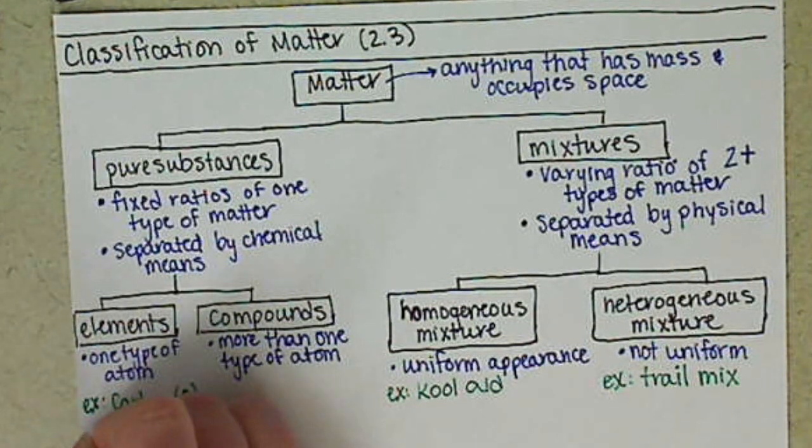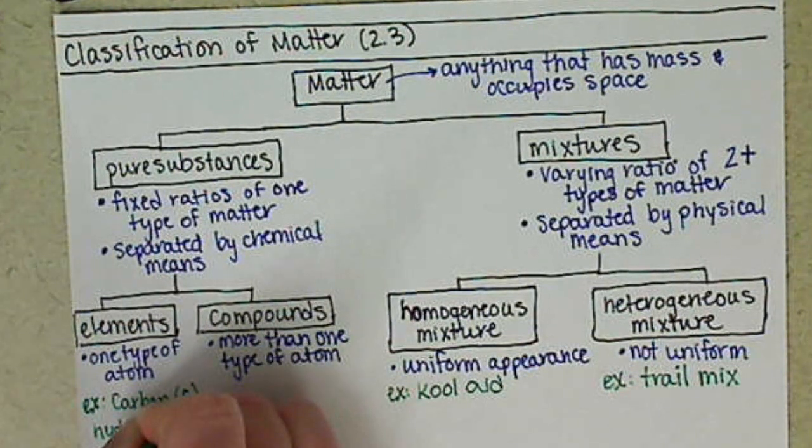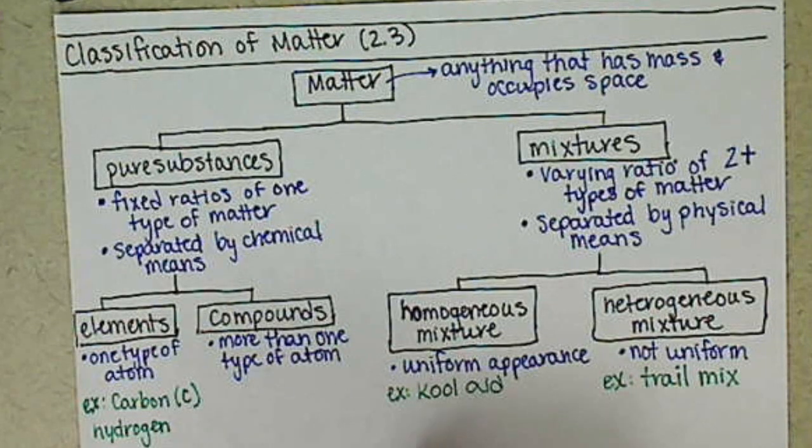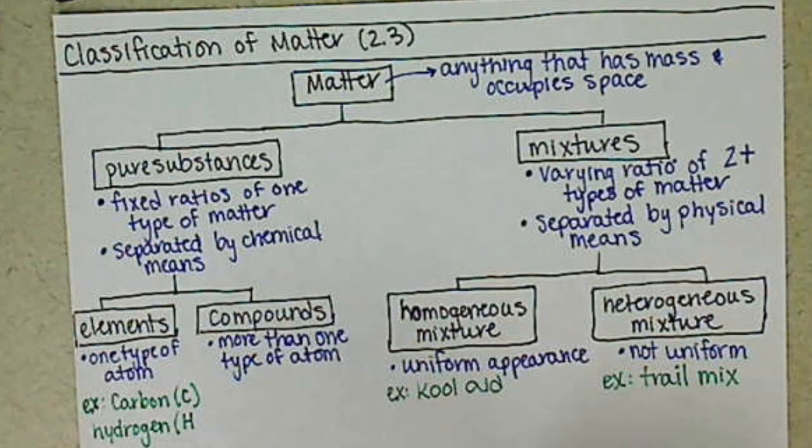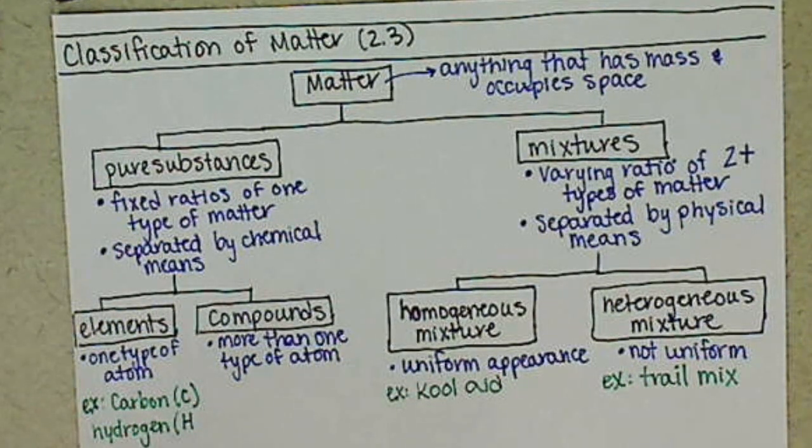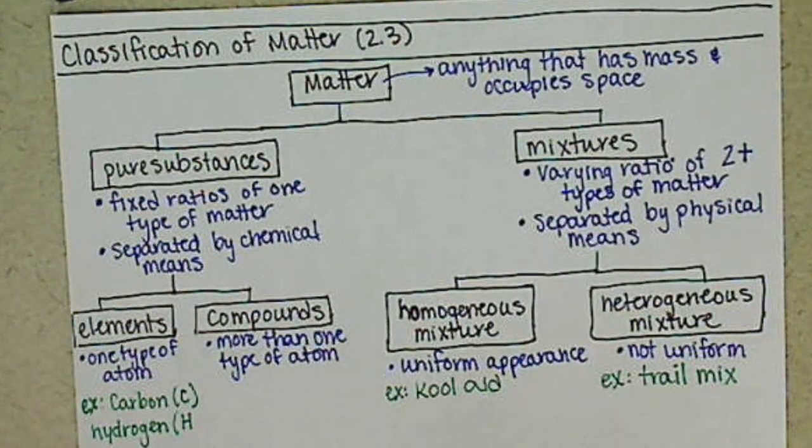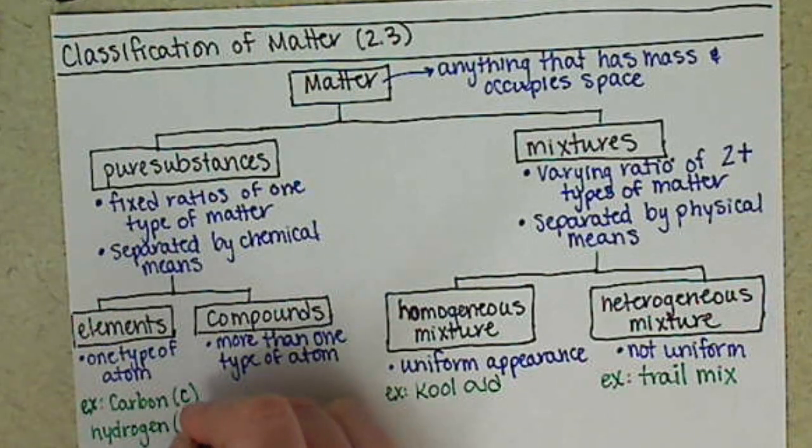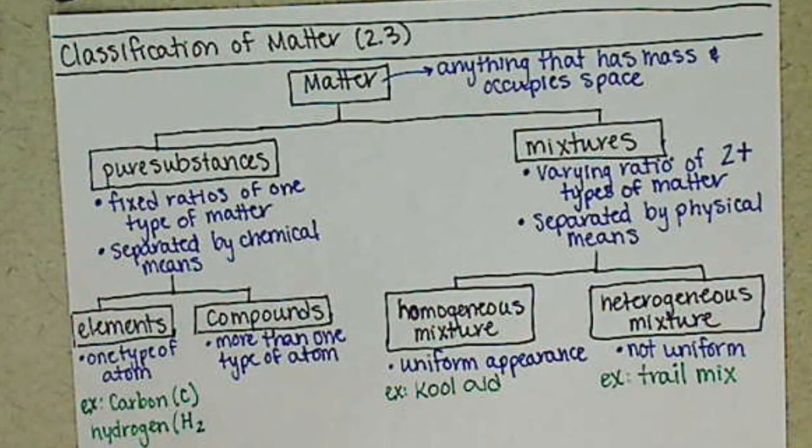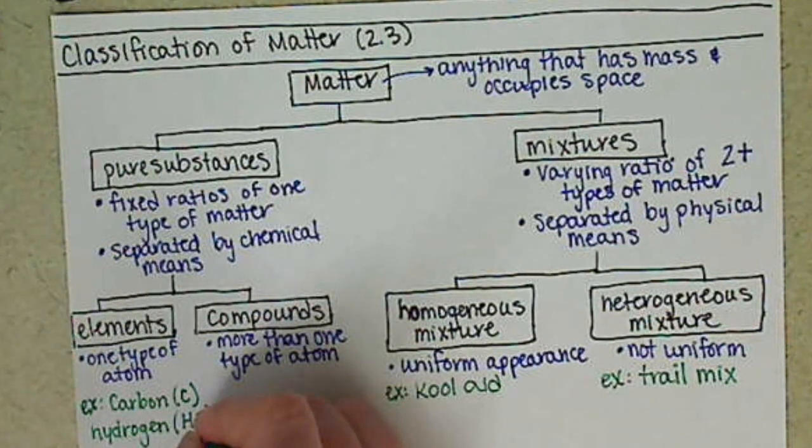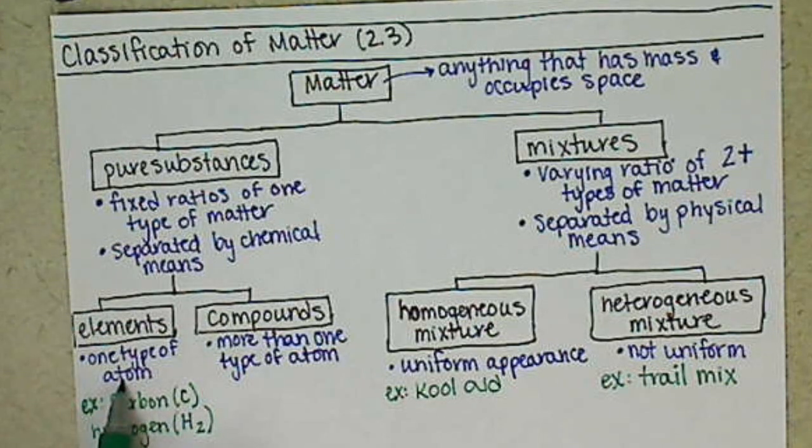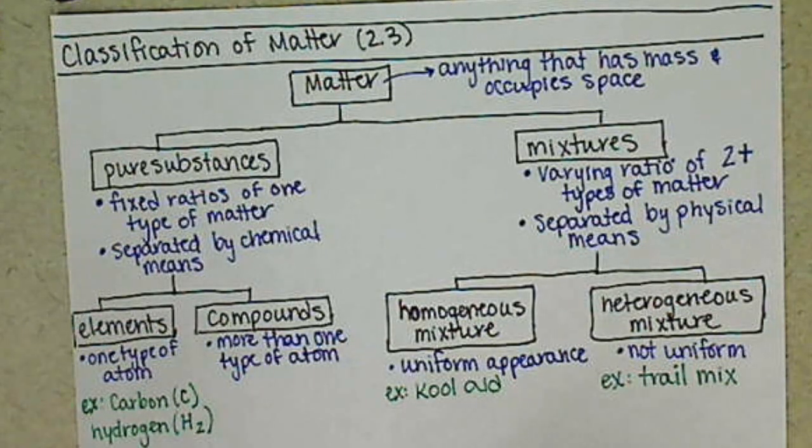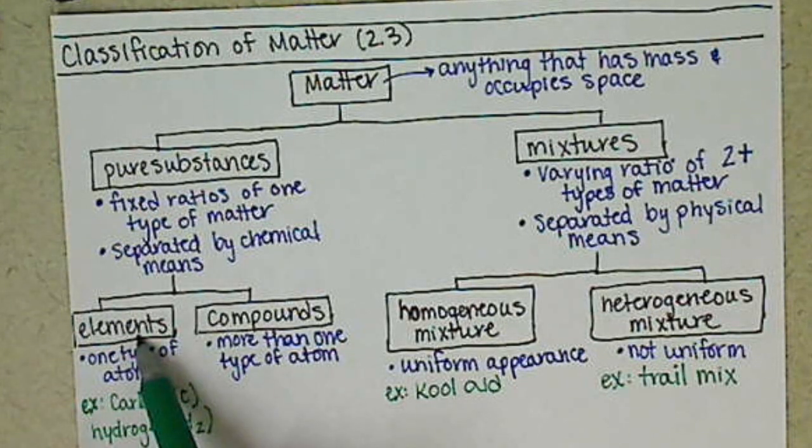Now, sometimes we can have more than one atom in our elements, but only just one type of atom. So an example of that, if we looked at, say, hydrogen. Hydrogen, we'll learn in Chapter 3, doesn't like to be by itself. So it has the symbol of a capital H, but when we find hydrogen in its pure state, when it's just hydrogen, there are actually two atoms of hydrogen that are combined together. But we still call that an element because it's just one type of atom. We can have multiple atoms there, but as long as they're the same type, we still classify that as an element.